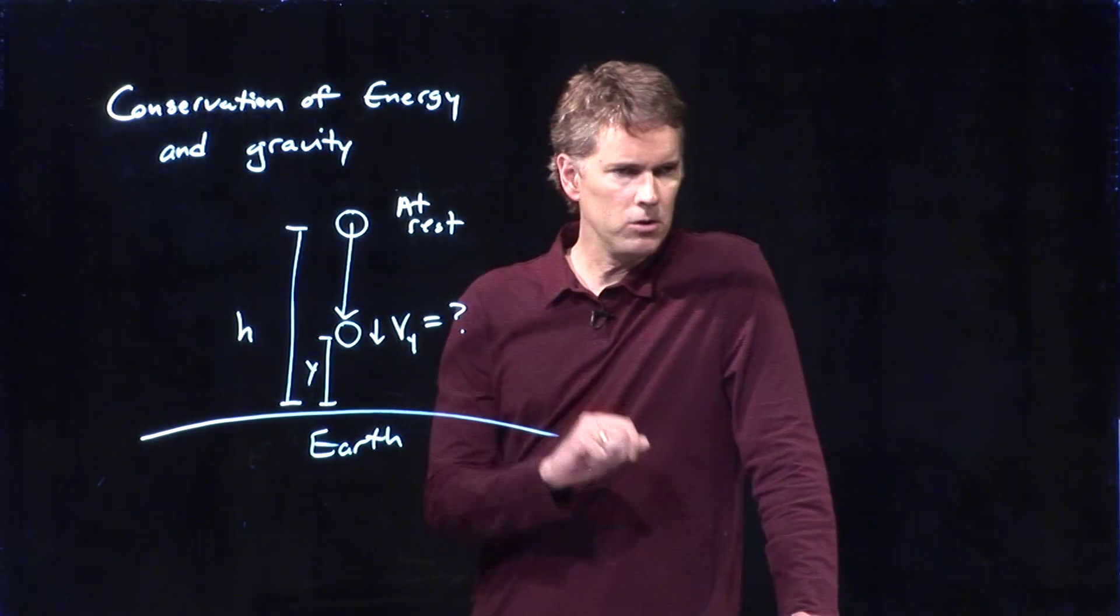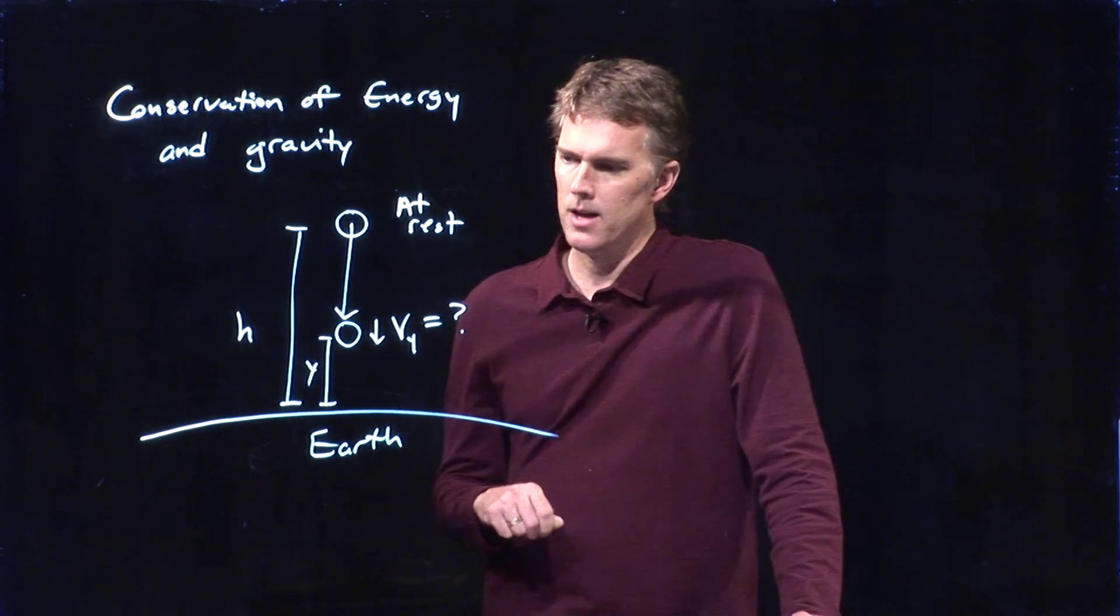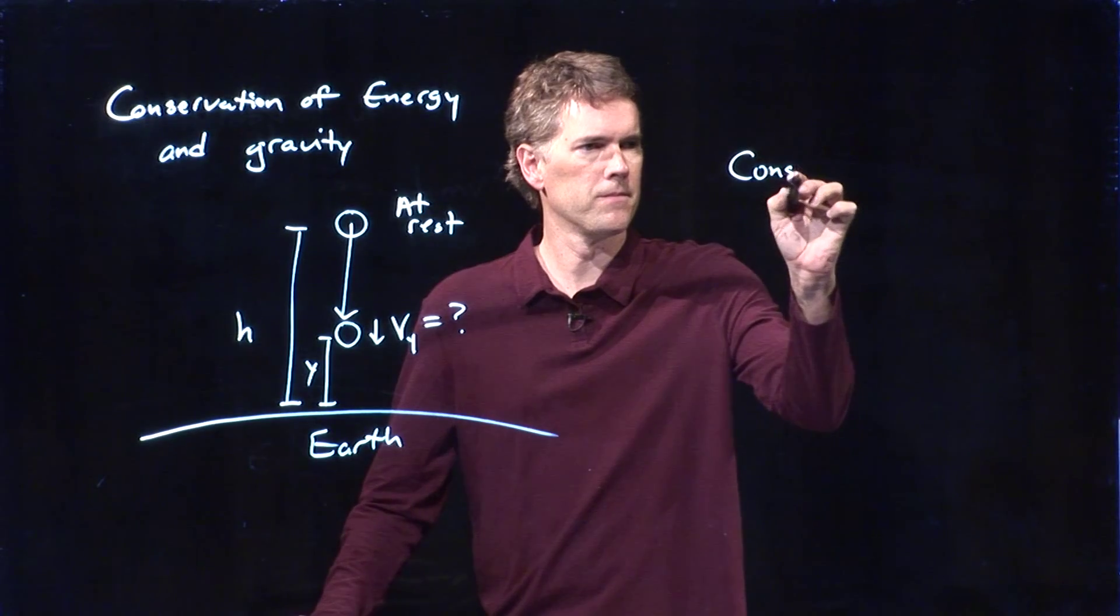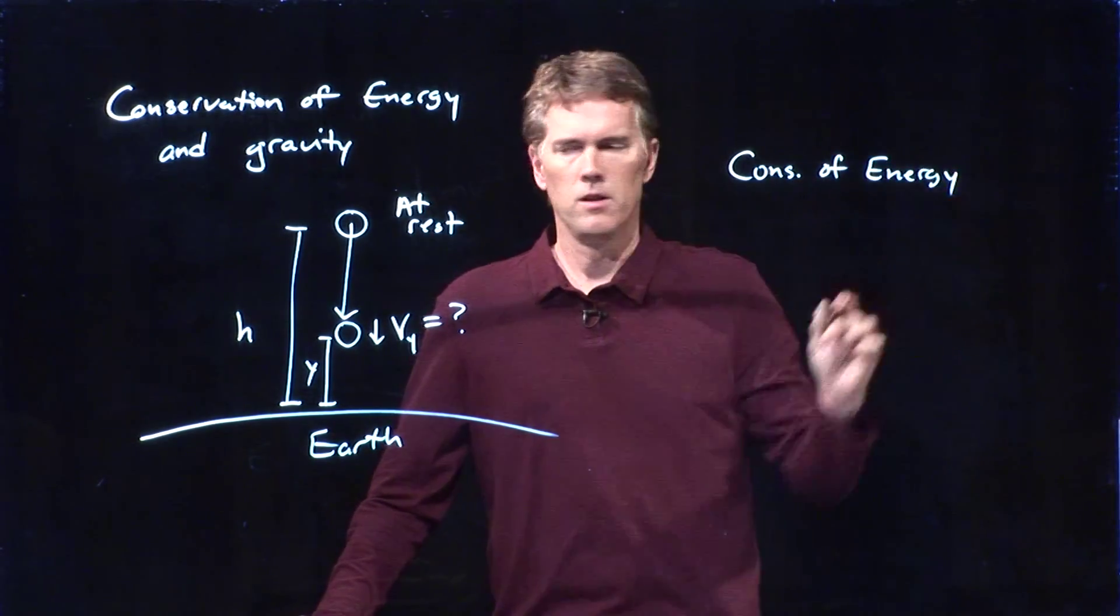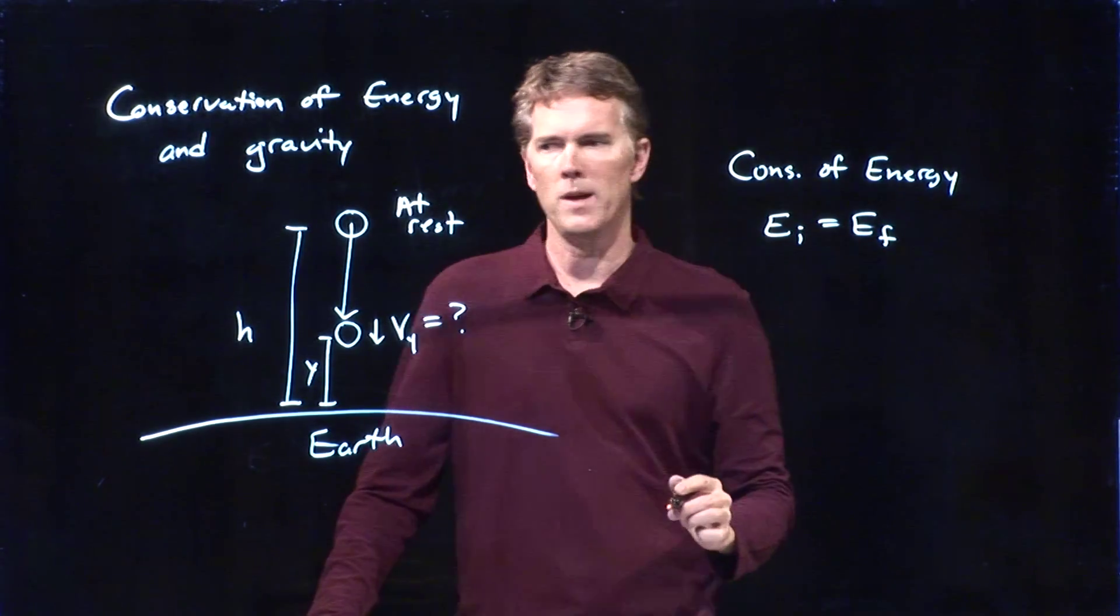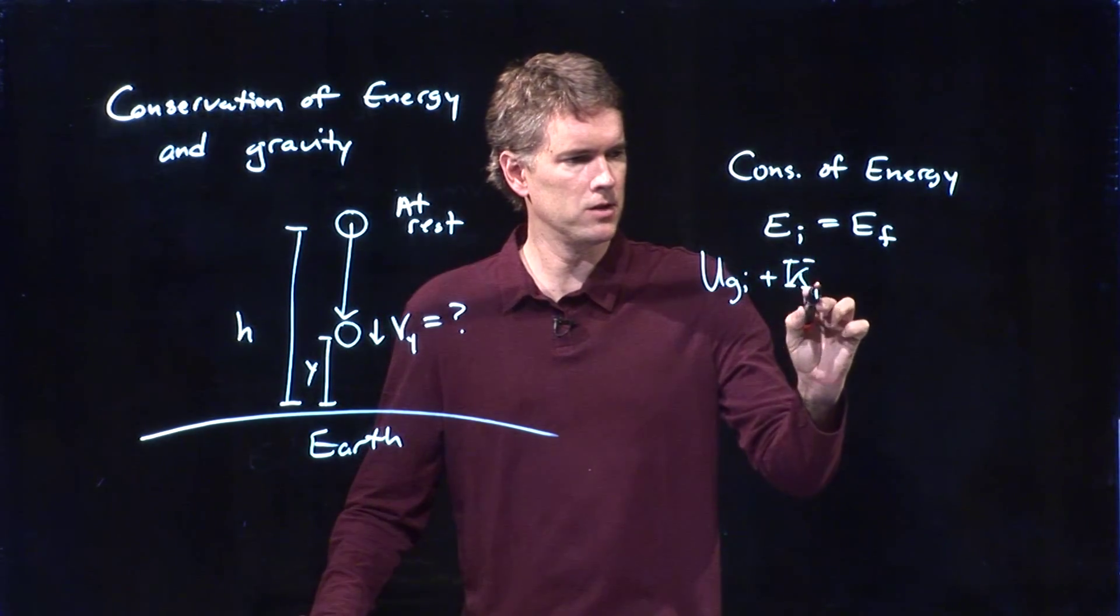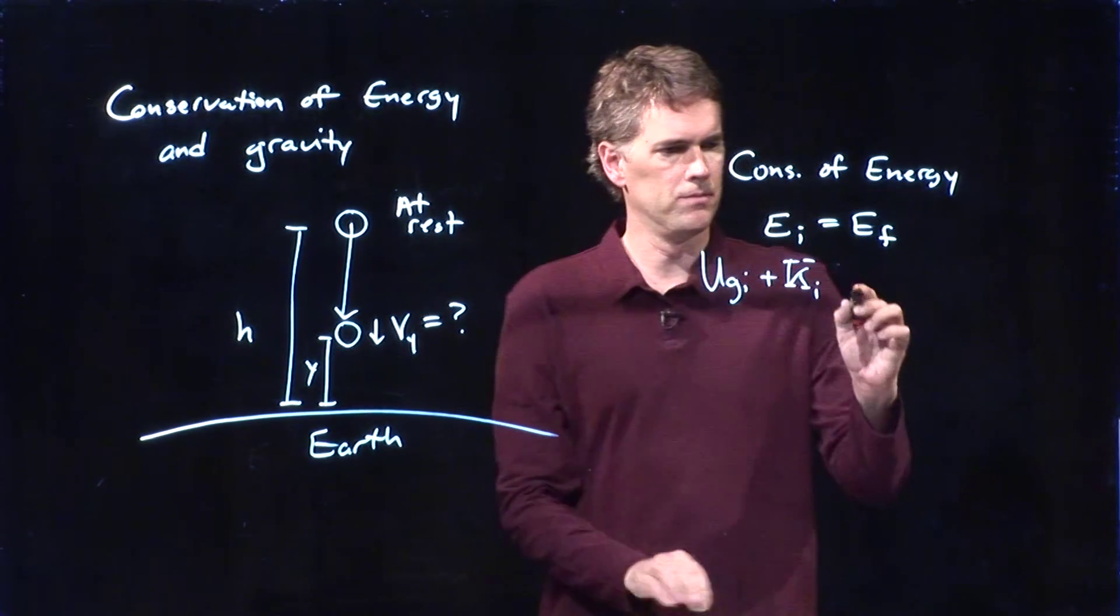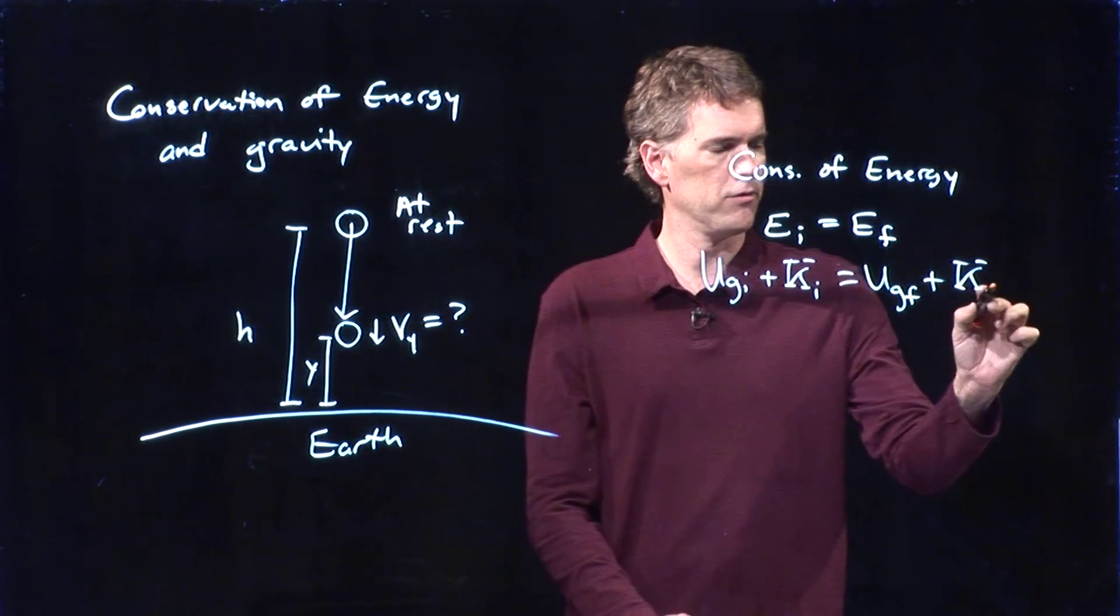How can we figure out how fast it's moving at that y? Well, we can always go back to the kinematic equations but there is probably an easier way and the easier way is conservation of energy. So energy tells us that EI equals EF. We have gravitational initially, we have kinetic energy initially. That's going to equal gravitational final plus kinetic final.